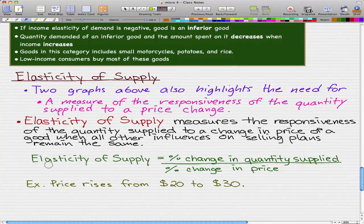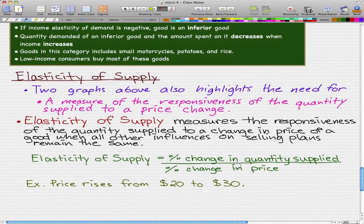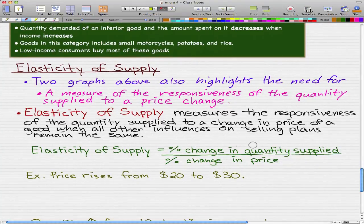That's it, and the formula is again pretty similar to what we were handling before. It's the percentage change in quantity supplied over the percentage change in price.